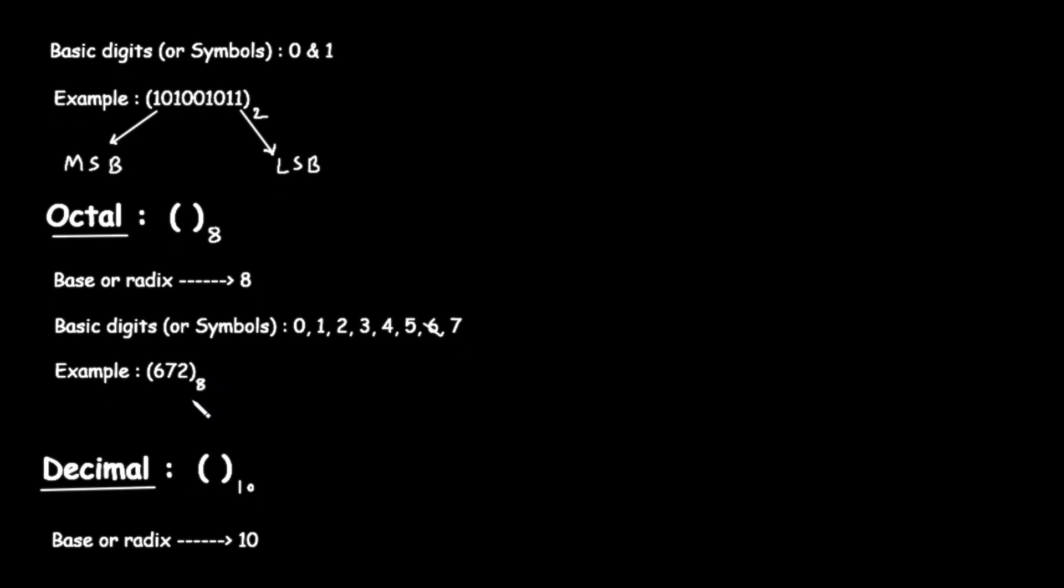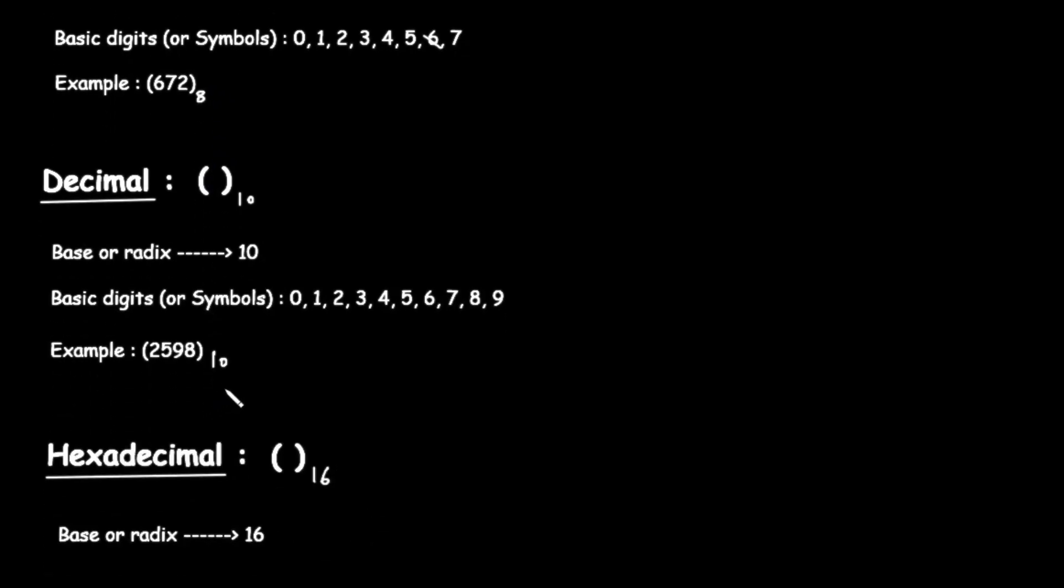Now, let's move to the system we are all most familiar with, the decimal number system. The notation for a decimal number is a number in parentheses with a small subscript 10. This indicates it's a base 10 number. Often, because it's the default system we use, the subscript is left off. The word decimal comes from deci, meaning 10. So, the base or radix of the decimal system is 10. This means it uses 10 unique digits.